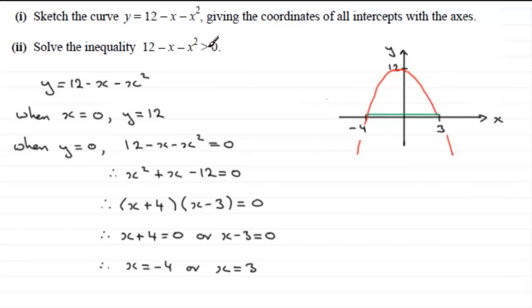So we're looking then for this section in here. But because it's greater than 0, we're not including minus 4 and 3, because if we did, that's what would equal 0 at those points. So in the second part for this, we can see that from the graph.